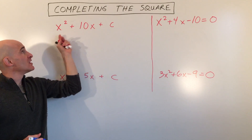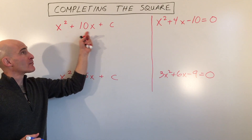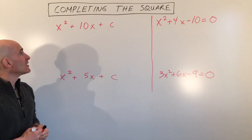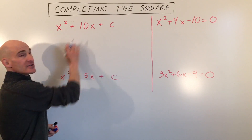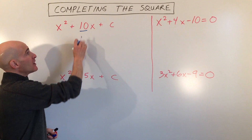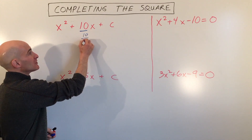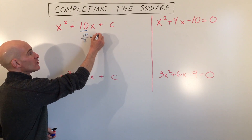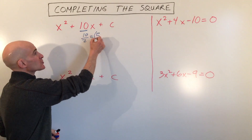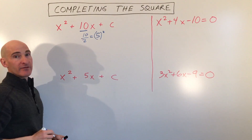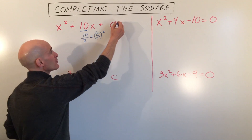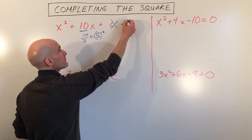We need to find what the c value is so that this will be a perfect square. What we're going to do is take half of this middle coefficient — so we're going to take the 10, divide it by 2, which equals 5. Then we're going to square that 5, and that gives us 25. So we're going to replace c here with 25.